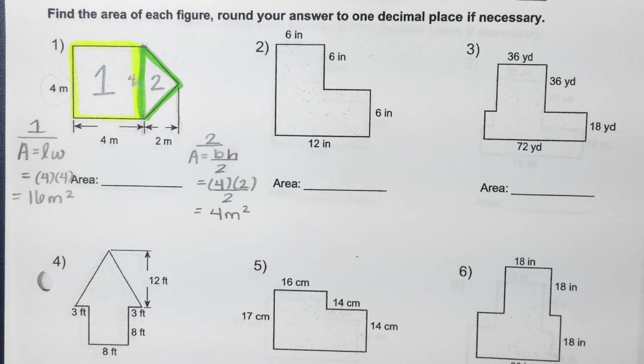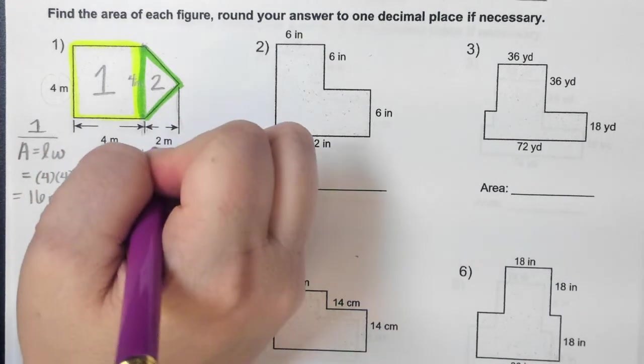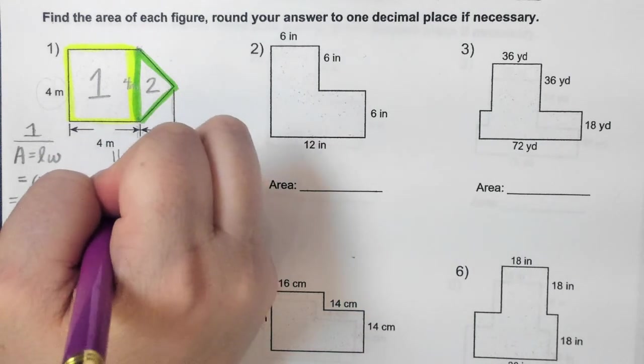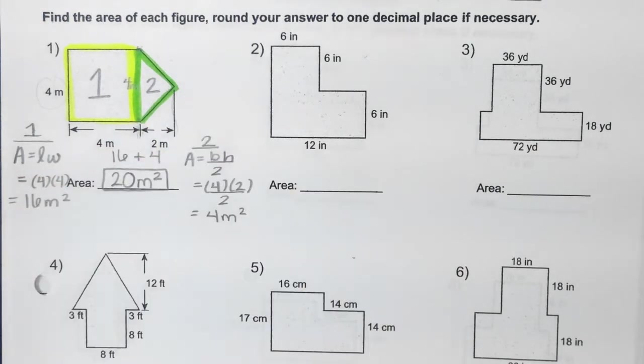Four meters squared. So, what do you think I'm going to do with my two shapes now? Macy? Thank you, Macy, for using your hand. We're going to add them together. Now, you'll notice this is different. I want you to remember that on your test, you're also going to have shapes where there are holes in the middle. If it's a hole, what are you doing? Subtracting, but if they're next to each other, we're going to add. So, 16 plus 4 gives me 20 meters squared. You notice I'm still writing out that I'm adding them together. Make sure we include all of the math involved.